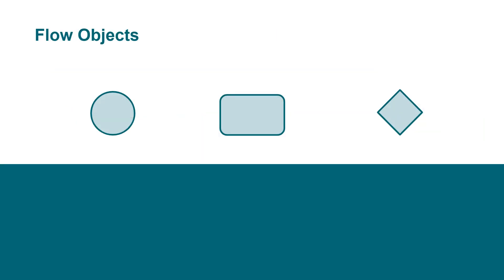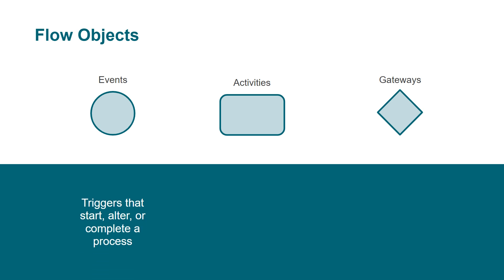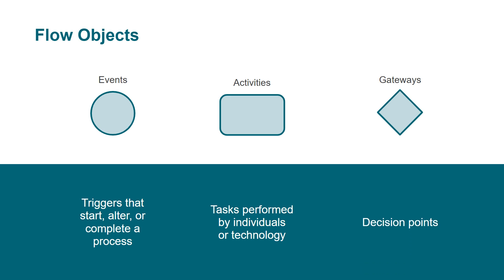Flow objects form the overall workflow. The three main flow objects are events, activities, and gateways. Events are triggers that start, alter, or complete a process. Activities are tasks performed by individuals or technology. Gateways are decision points.